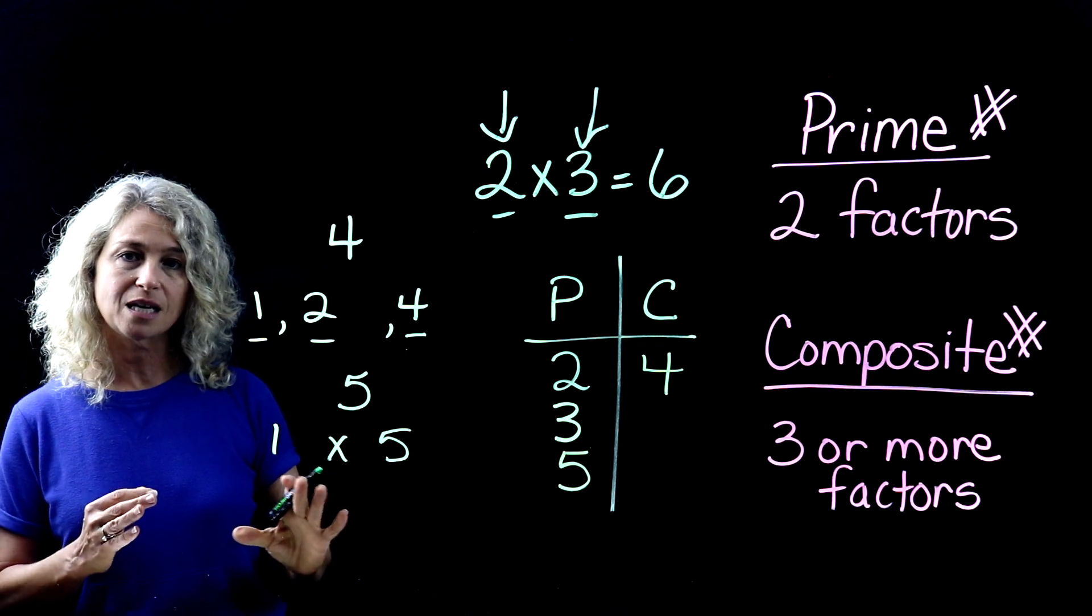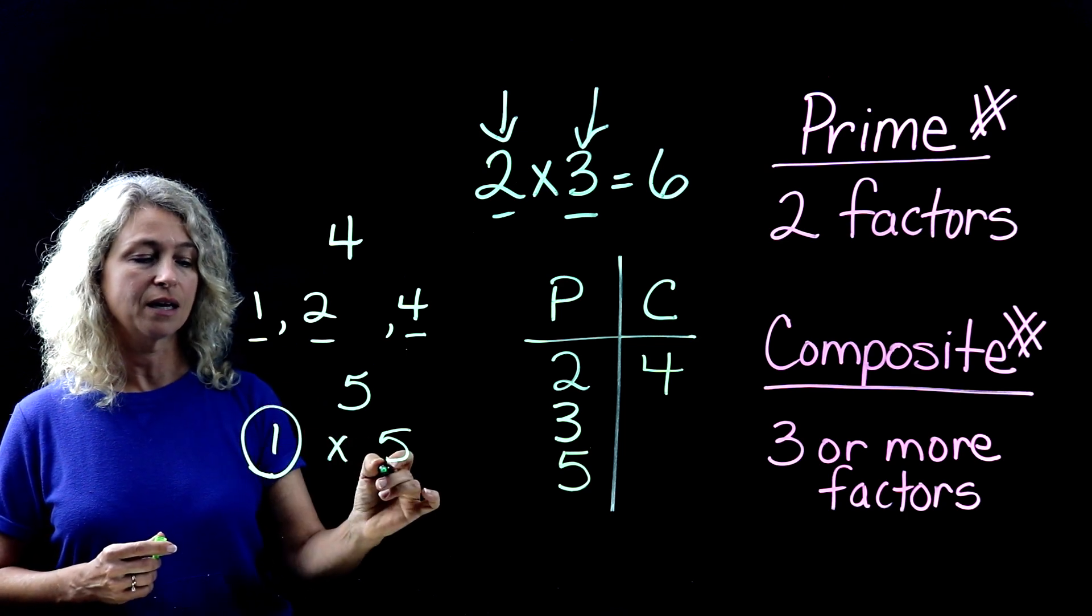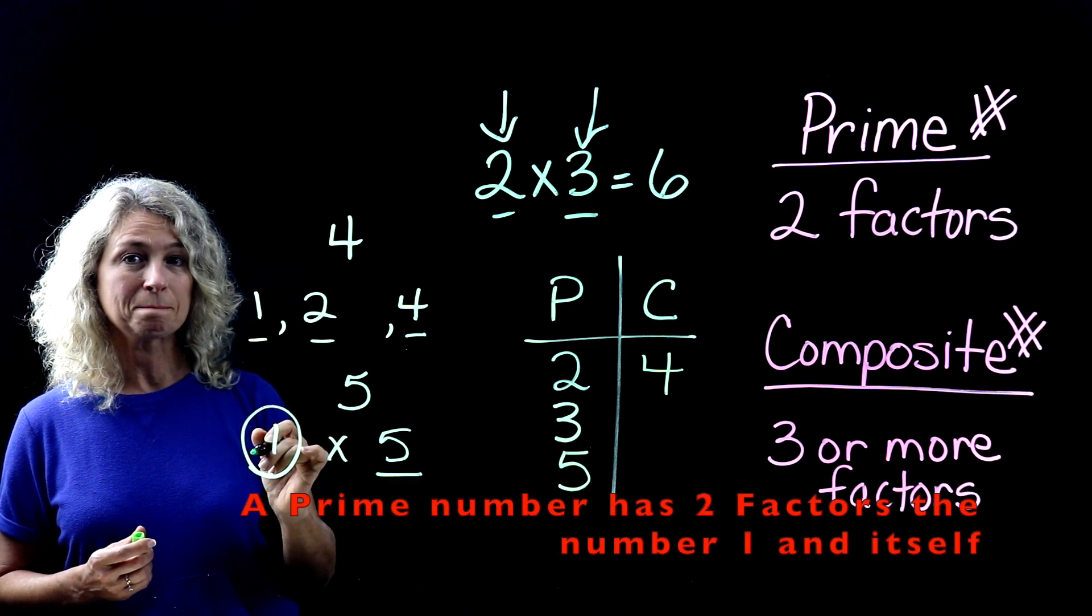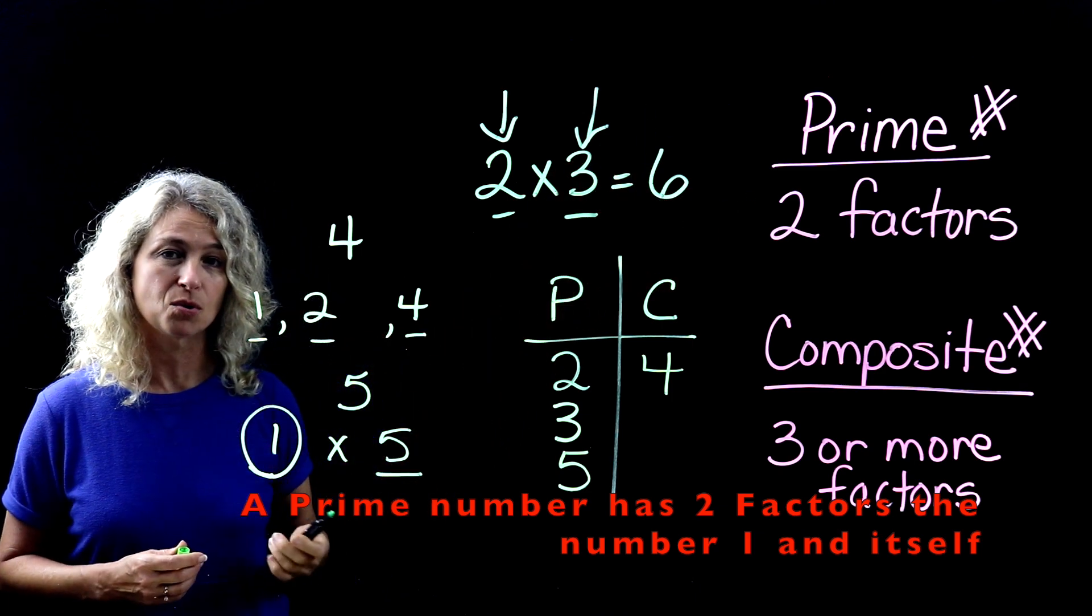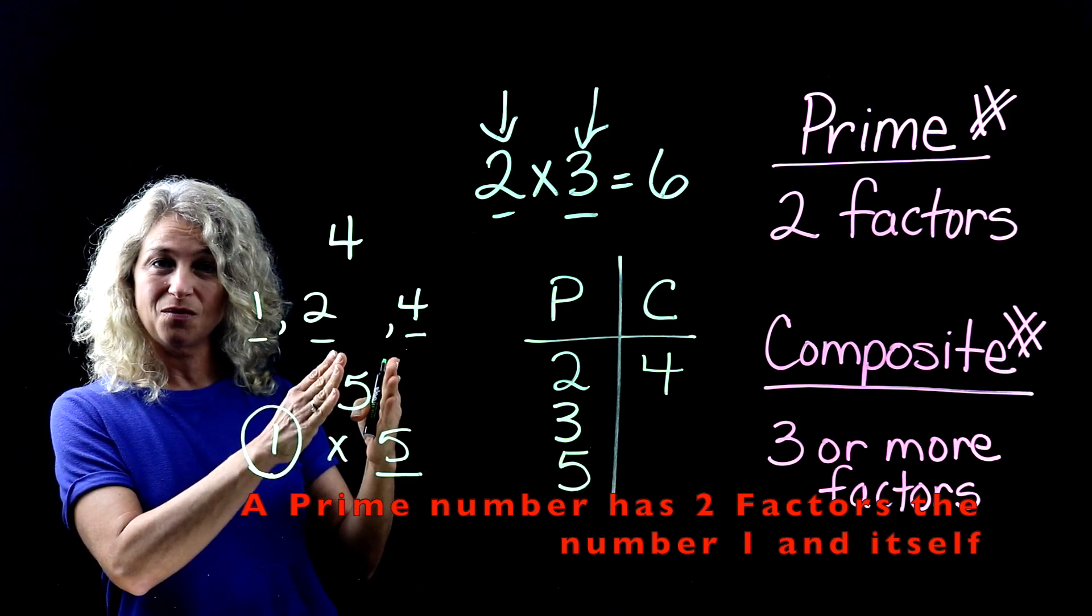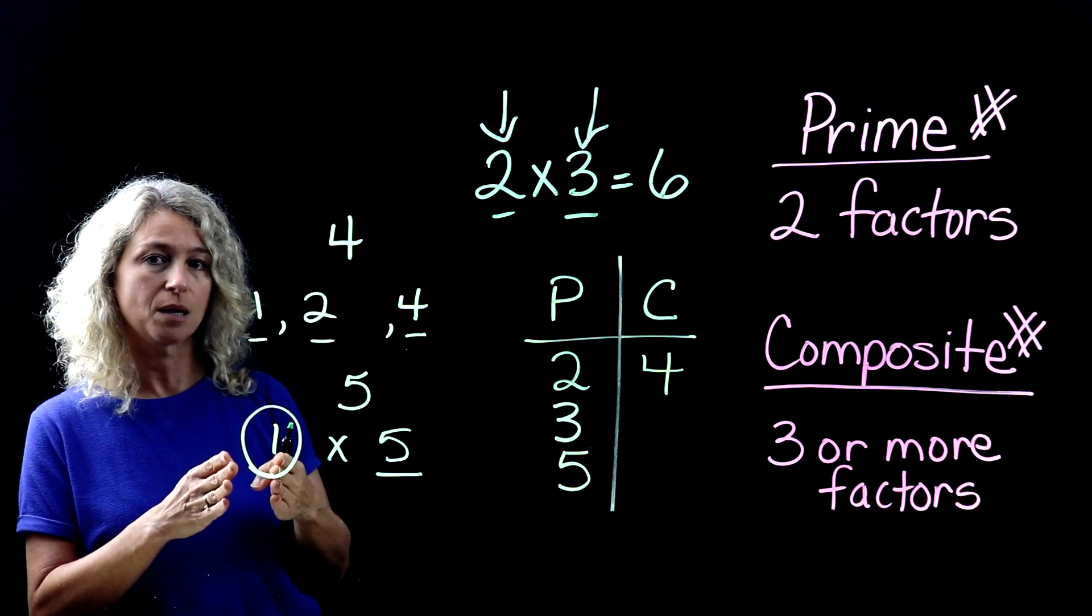Are you noticing every time we have a prime number that we're multiplying the actual number itself times one? So that is also a characteristic of prime numbers. It only has two factors. And it's going to be the factor of the number itself times one, always, for prime numbers.